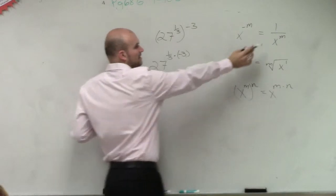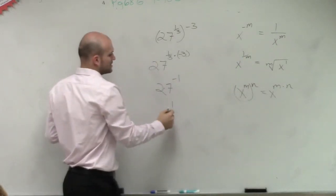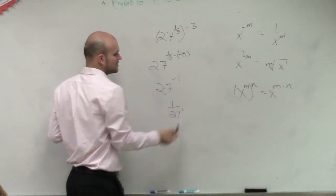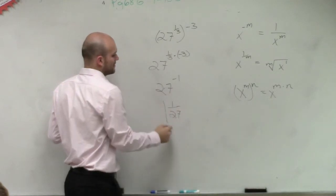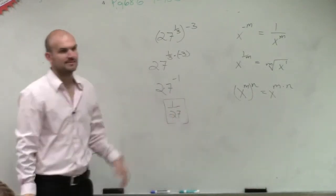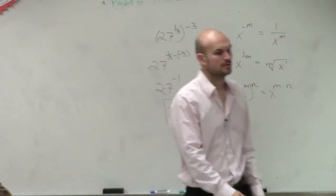27 raised to the negative first power, now we apply this rule, is 1 over 27 to the first, which is just 1 over 27. So we have to really make sure we remember our exponent rules.